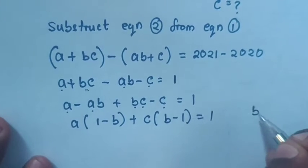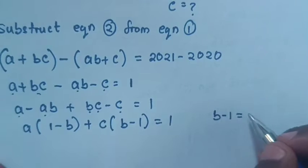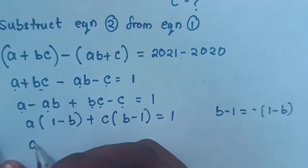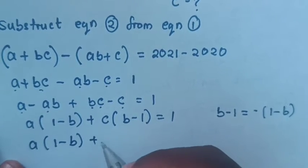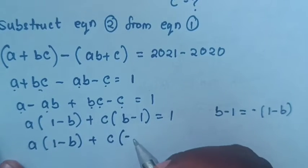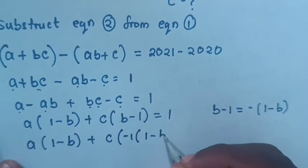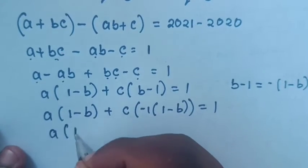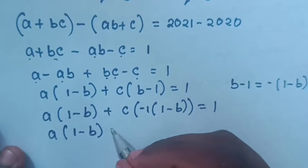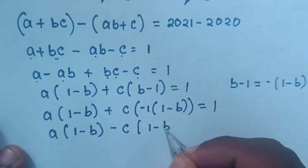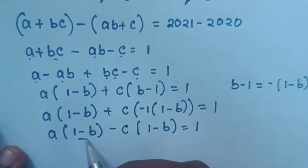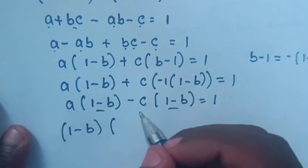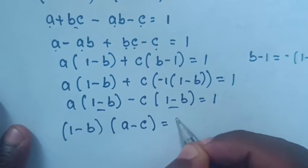You can see A has (1 minus B) but the C term has (B minus 1). So we take negative out of the bracket for (B minus 1), rewriting it as negative (1 minus B). Substituting that, we get A(1 minus B) minus C(1 minus B) equals 1, so (1 minus B)(A minus C) equals 1.